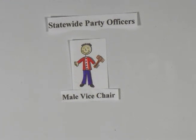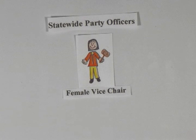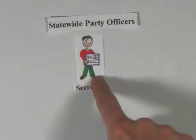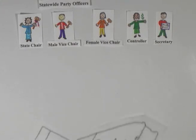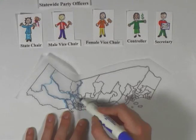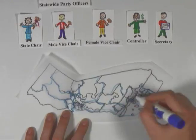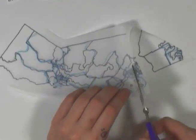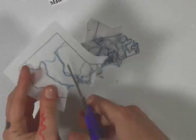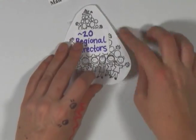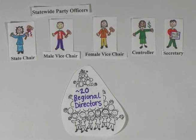There is one male vice chair and a female vice chair to assist the chair in his or her duties, a secretary who maintains the records of the party, and a controller who has access to and reports on the financial affairs of the state party. In addition, in odd-numbered years, about 20 regional directors are elected for two-year terms by the delegates in their region. The regions are determined based upon assembly district boundaries, with each region containing a specified number of assembly districts. Regional directors serve an important role and help link the delegates, elected officials, county committee members, and volunteers with one another and with the state party.